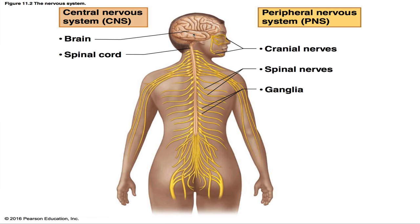Both the spinal cord and brain are well protected by bone — the cranium protects the brain and the vertebrae protect the spinal cord. The spinal nerves exit through the intervertebral foramina. The swellings you see along these nerves are called ganglia, which are aggregations of nerve cell bodies.